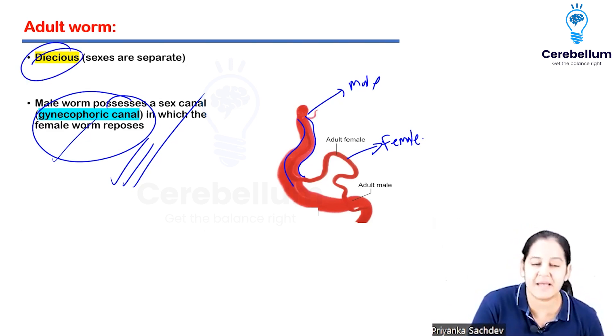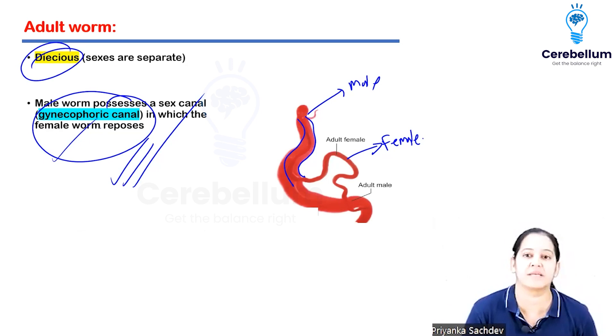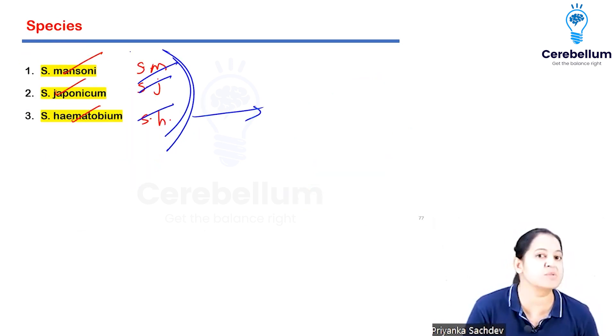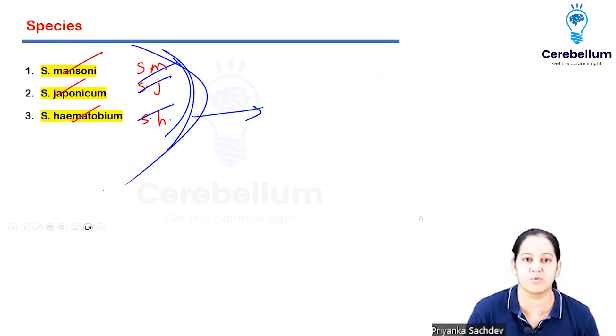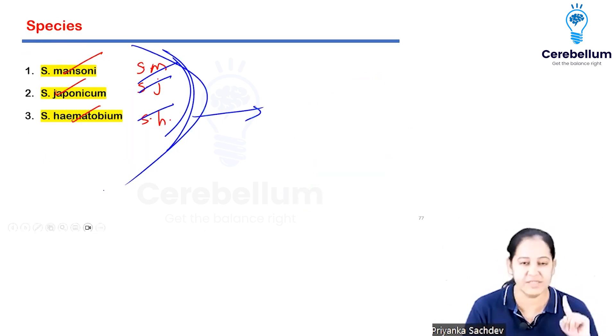The sexes are separate - this is called dioecious. I am studying Schistosoma; there are three types of Schistosoma. One other thing to learn: